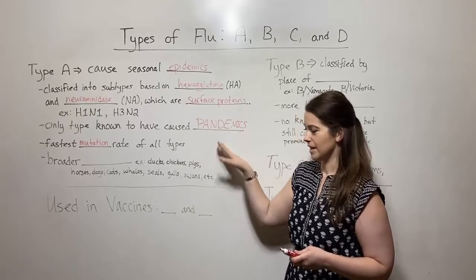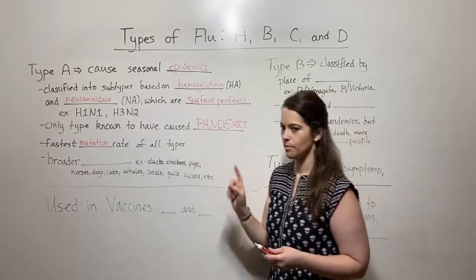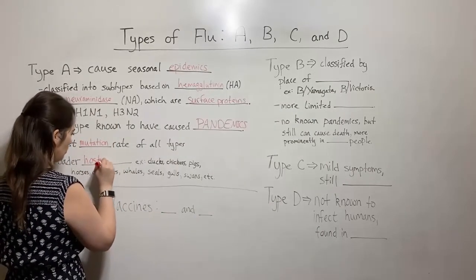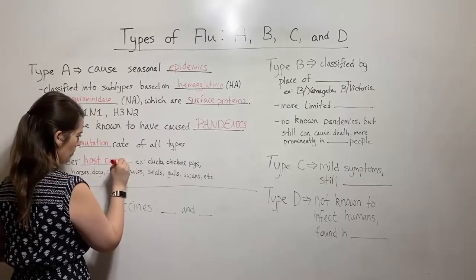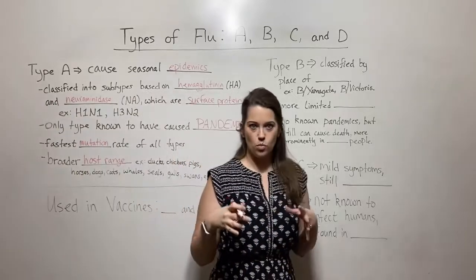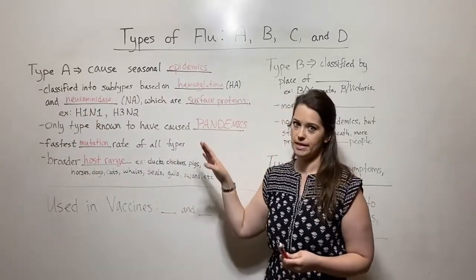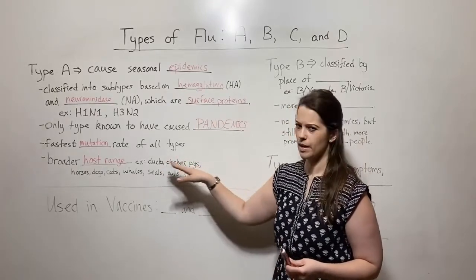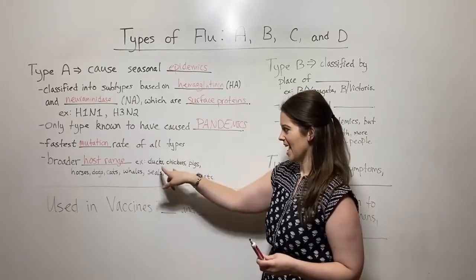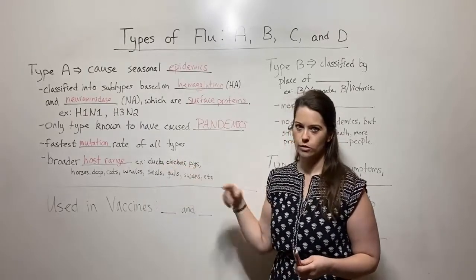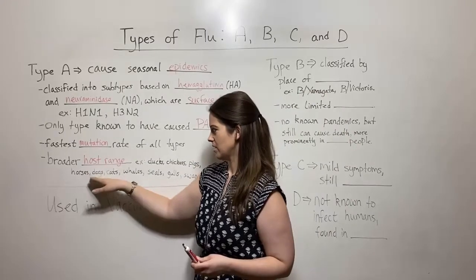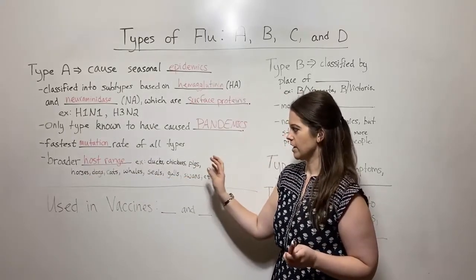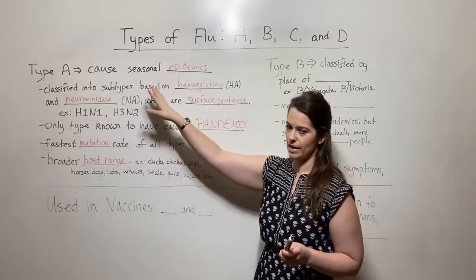It also, another reason it can cause these pandemics is because it has a broader host range. So what does this mean? This means there are more species that a type A influenza can infect. And I've listed just some of them here. Ducks, chickens, pigs. These are the ones we maybe hear about the most when we think of like avian flu or swine flu, jumping into humans, but also horses, dogs, cats, whales, seals, gulls, swans, and more. So lots of different species can be infected by type A.